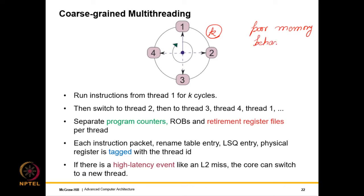To support hardware multithreading, we need separate program counters for each hardware thread, separate ROBs (or a special shared ROB allowing instructions of thread 2 to retire before thread 1), and separate checkpointing state and retirement register files. Rename table entries can be shared with one master rename table, but architectural registers and instruction packets must be tagged with the thread ID. LSQ entries also need thread ID tagging, especially if storing virtual addresses.